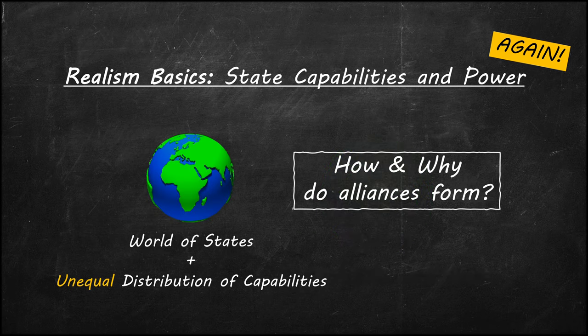The world is made up of states. We can colloquially call them nations or countries, or to be more technical, call them nation-states. It doesn't really matter what we call them as long as we understand that states are autonomous political entities that can make decisions on internal and external policies. The numerous states in the world have different levels of power. This is called the unequal distribution of capabilities. In a world of states with unequal distribution of capabilities, realism theories ask the central question: how and why do states form alliances?